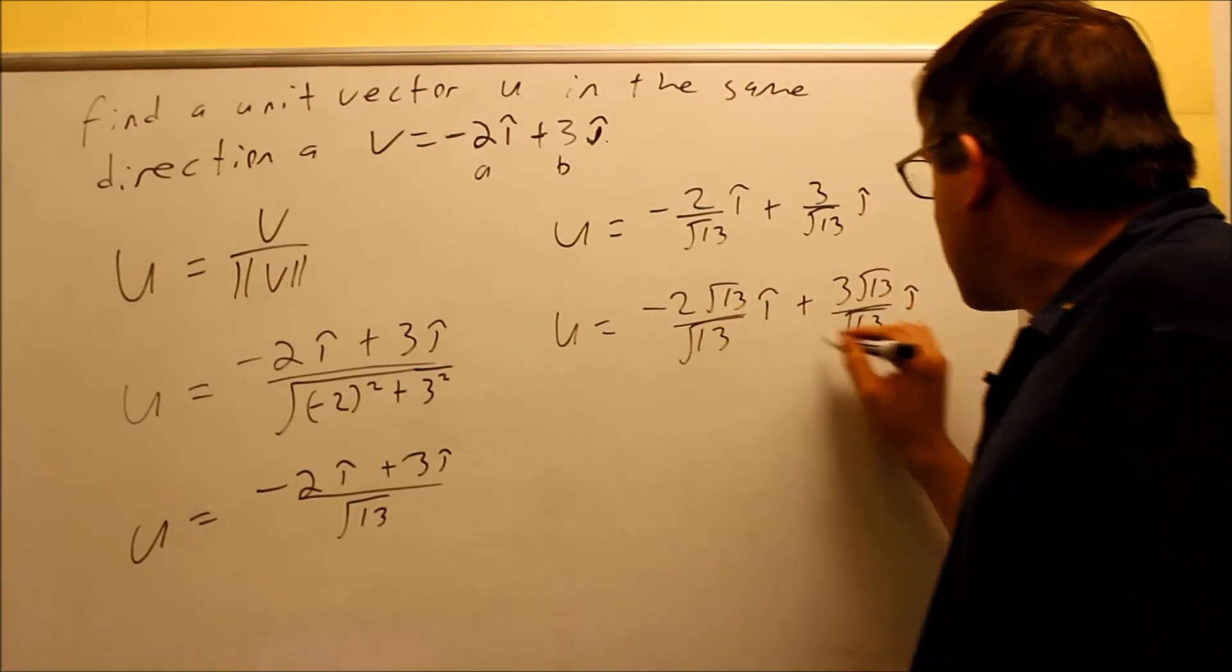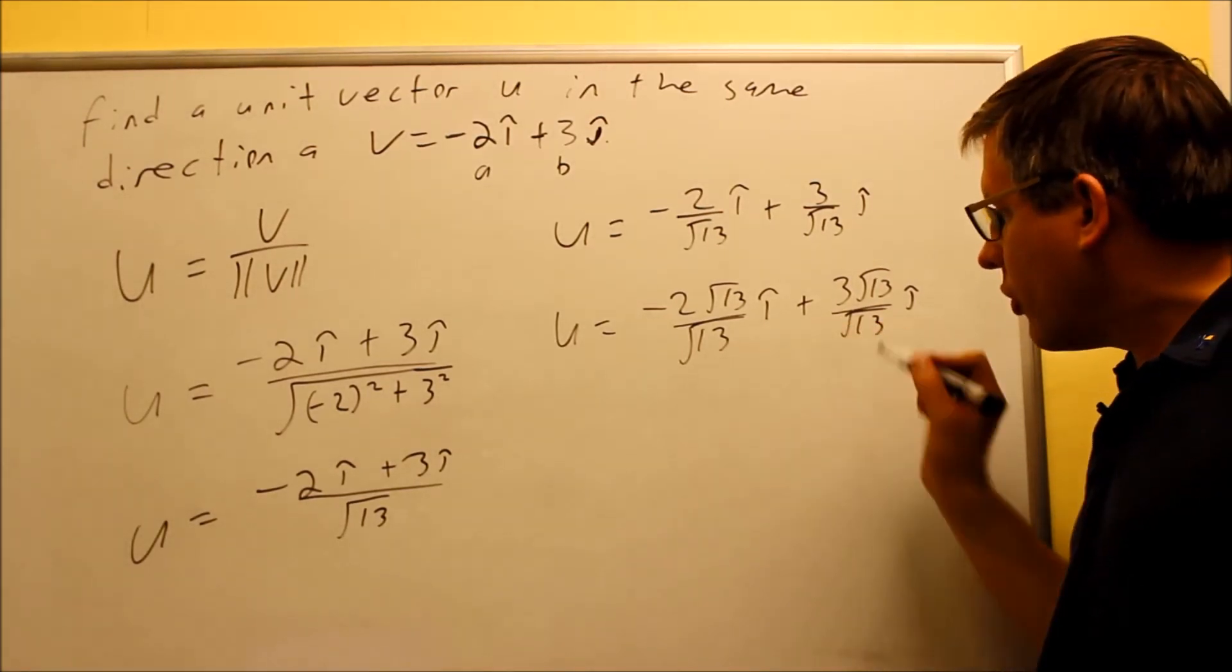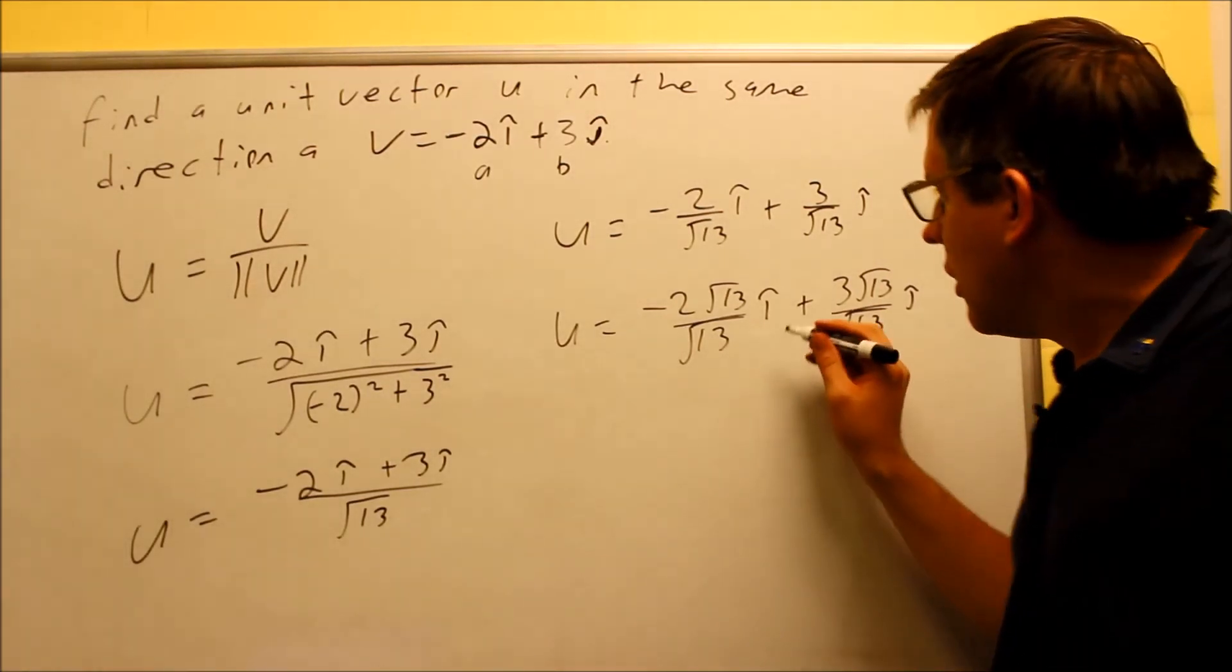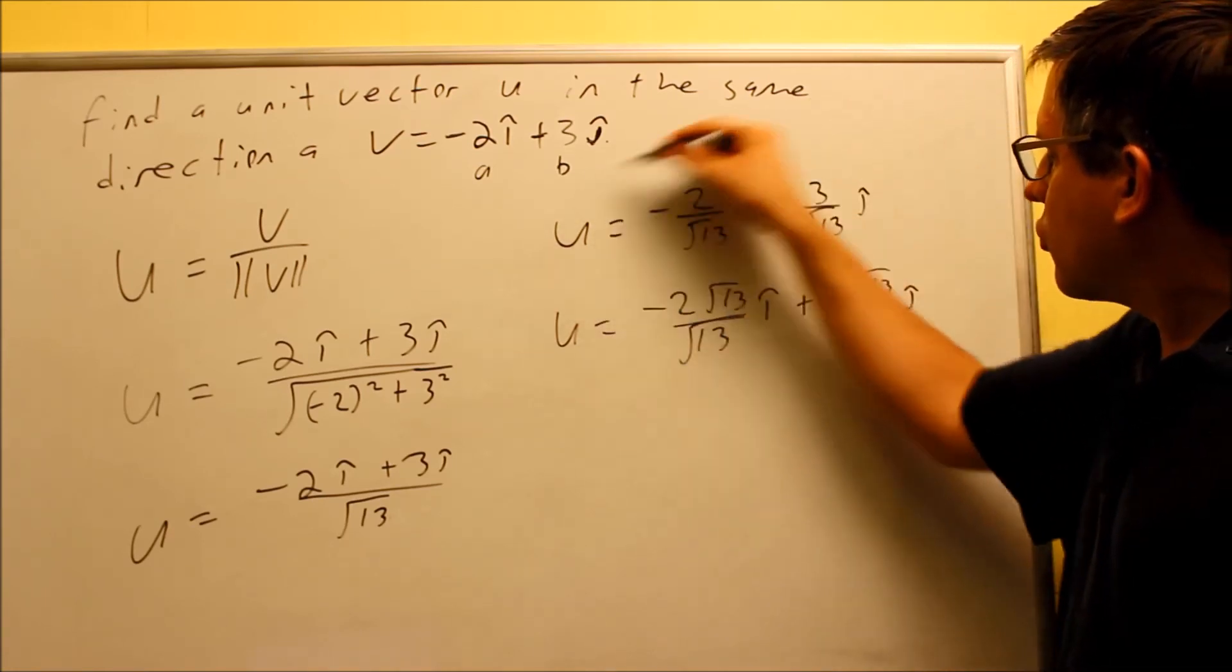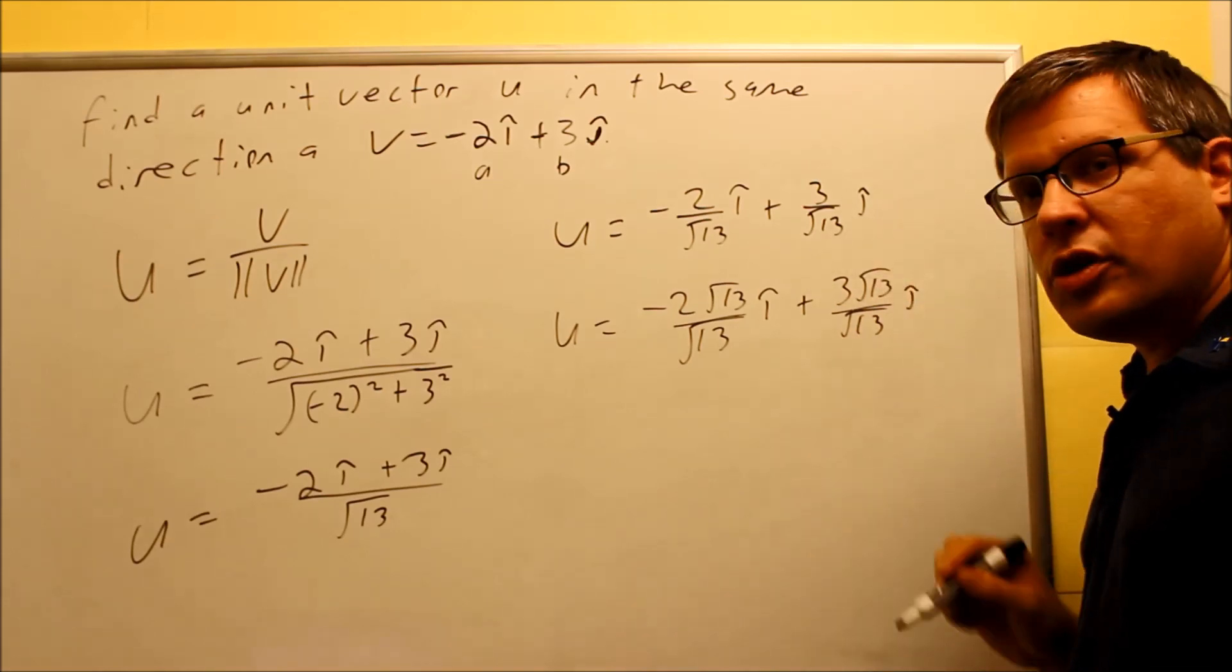So if you can't break down the square root anymore than that, then you want to go ahead and just leave it with that. So square root of 13, I couldn't do any more. So therefore, that's as far as I could go with my answer. So you can either write it as the first one here with it broken up or the bottom one with the square roots down there. Either one would be correct.